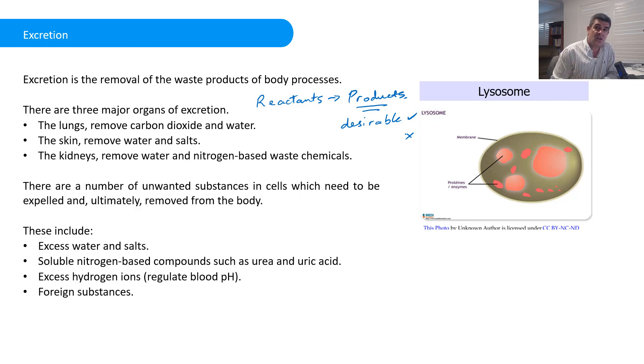For multicellular organisms, that occurs at a system level. So there are a couple of important organs that are part of the excretory system that help to remove some of these processes, some of these products of processes from our bodies.